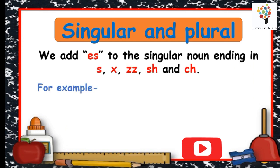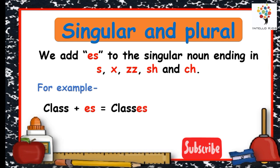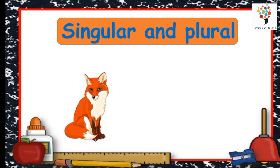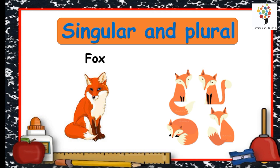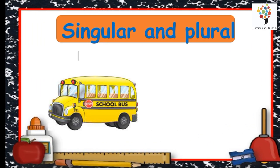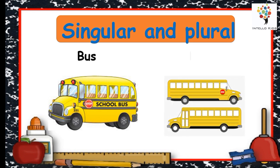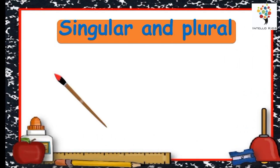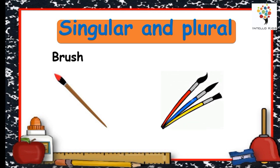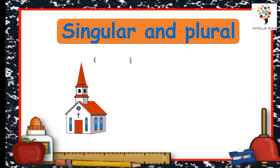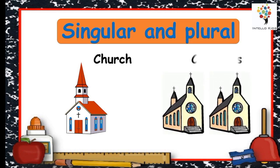We add ES to the singular noun ending in S, X, Z, SH and CH. For example, class plus ES equals classes. Fox, foxes. Bus, buses. Brush, brushes. Church, churches.